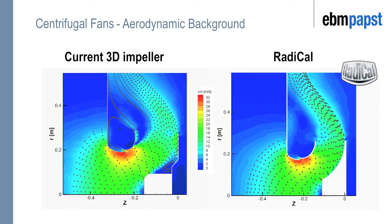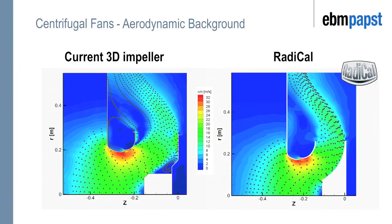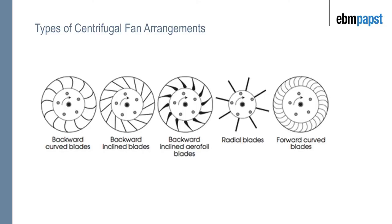This is also shown in a short illustration. There are five standard types of centrifugal fan, which are defined by their blade type: first, a backward curved blade; second, a backward curved inclined blade; third, a backward curved inclined airfoil blade; fourth, a radial blade; and fifth, a forward curved blade. These types of fans are available in both housed and non-housed versions.